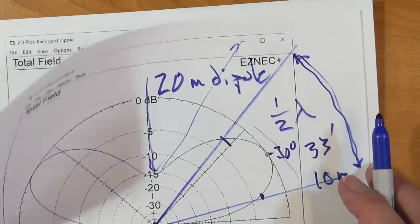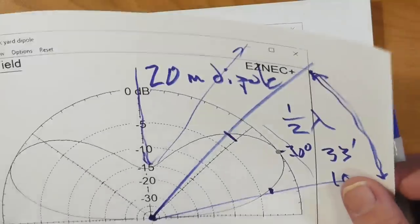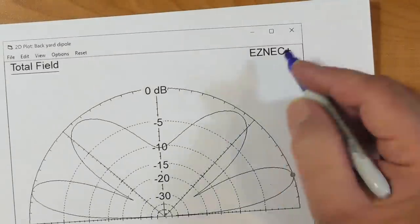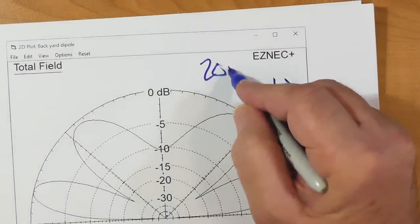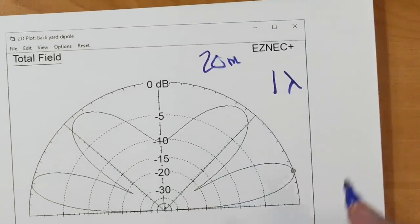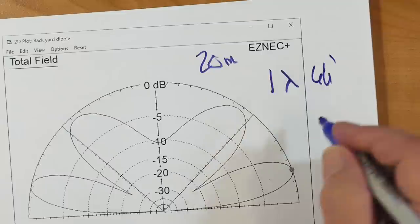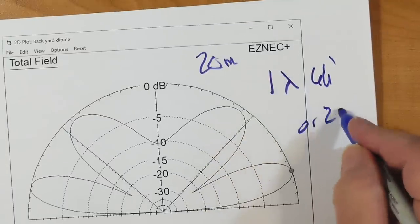And even out here, there's just not too much. But you get this, which your power is spread across. Now, let's do a couple things to this antenna. First, let's double its height. So this is 1 lambda, and again, 20 meters. And that would be 66 feet or 20 meters.